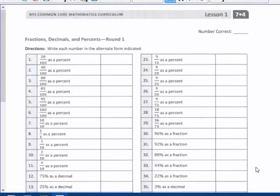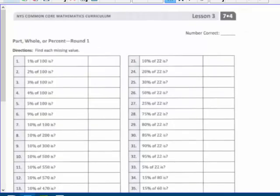We've got a new packet, but we're still working on proportional reasoning percent applications. I'm looking at this 1F packet, and it's got this chart on page 1. There's not just one page, but there's two pages.